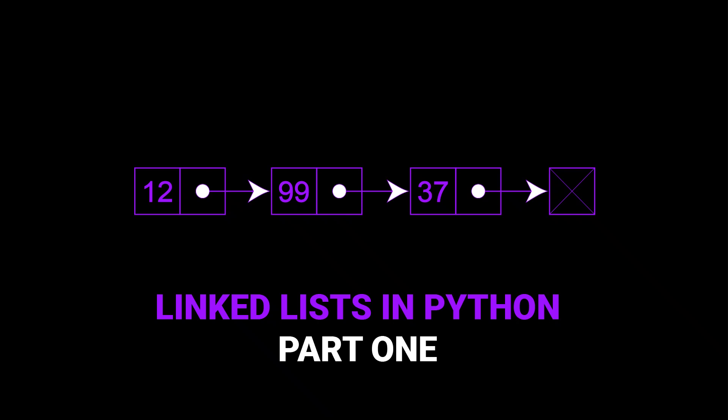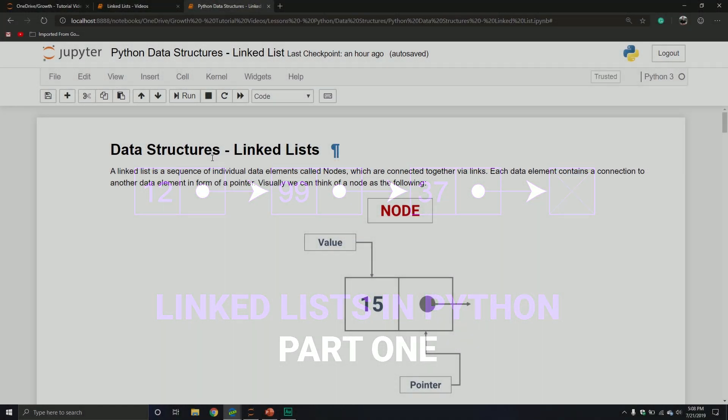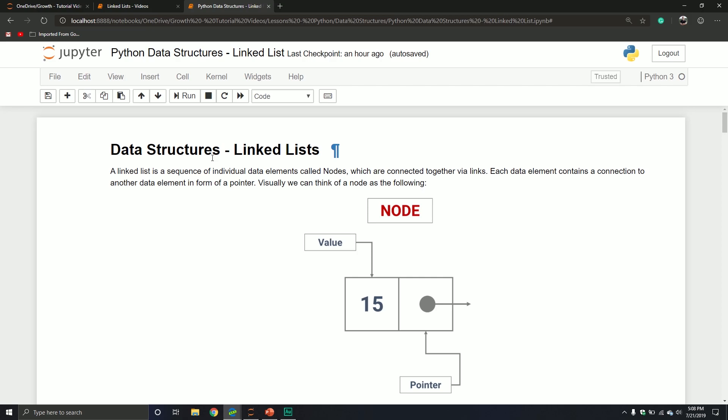Welcome back everybody to another Python tutorial. This is the start of a new series where we're going to dive into data structures. Data structures are a very important concept if you're ever planning to interview for a software position or basically a lot of different programming positions. They require you to understand different types of data structures, how they work, their performance portfolio, how to build them, and how to do different operations on those data structures — really when to use which ones and when not to. The first one we're going to talk about is probably one of the most simple ones, and it's called linked list.